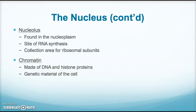Within the nucleus you would find the nucleolus, found in the nucleoplasm — the cytoplasm of the nucleus. It's the site of RNA synthesis and where you would see a collection of all those ribosomal subunits, made out of rRNA. You should also find chromatin, which is the long DNA molecule wrapped around histone proteins — the genetic material of the cell.